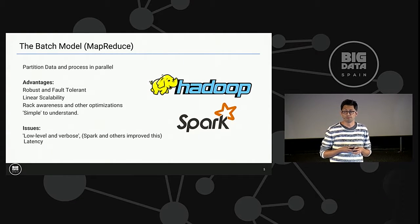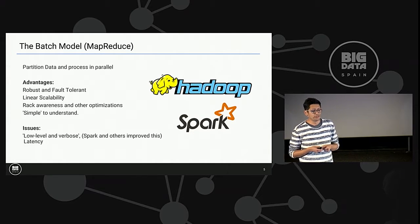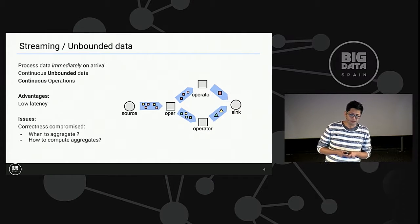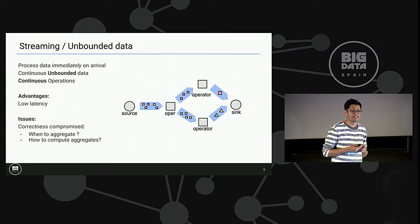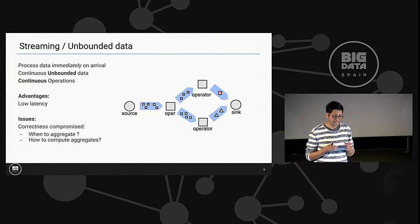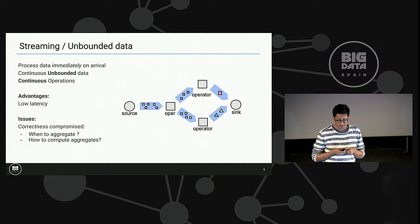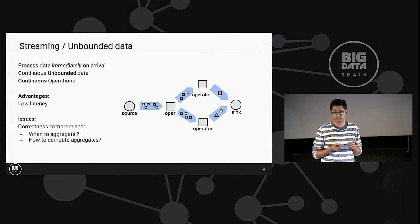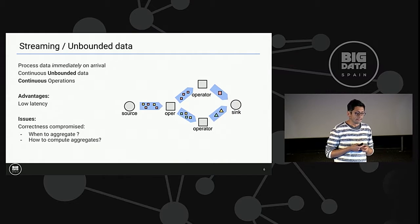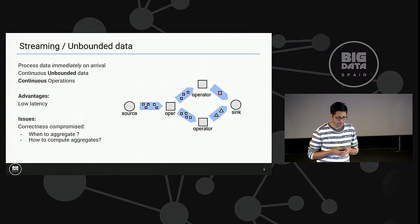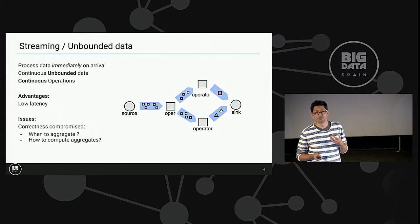Spark appeared and it revolutionized this. It makes the programming model way easier. But then if we continue to do batch, we're still with another issue that is latency. Then, as also most of you should know, we have the streaming model. The idea of the streaming model is that we are going to process the data immediately when it arrives. So we have continuous data and, eventually, infinite data. We don't have a notion of end, so this changes a lot the semantics. And it has the great advantage that it has a low latency. But then we have a problem with correctness. When we don't know when is the end, we have to decide when to produce results. And this is the great question in streaming is when we should aggregate data and how we should compute these aggregates.